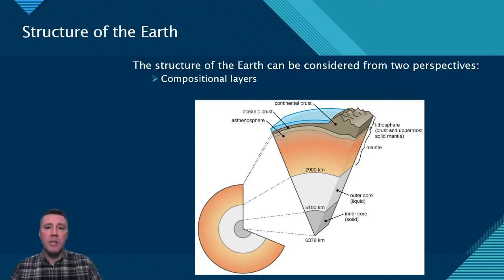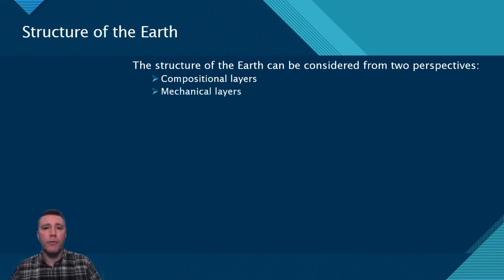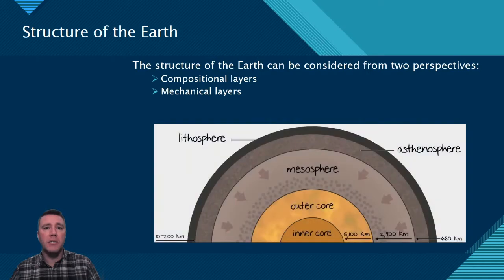Traveling deeper into the mantle, the material becomes less viscous due to growing heat and pressure. The Earth's core is comprised of a solid inner portion and a liquid outer layer. Viewing the structure of the Earth from a mechanical perspective allows us to observe the processes taking place in each region. Most importantly for plate tectonics is what's occurring in the mesosphere, part of the mantle, the asthenosphere, and the lithosphere. Because of the convective currents in the Earth's mantle and asthenosphere, the solid lithospheric plates float on top of those two layers.